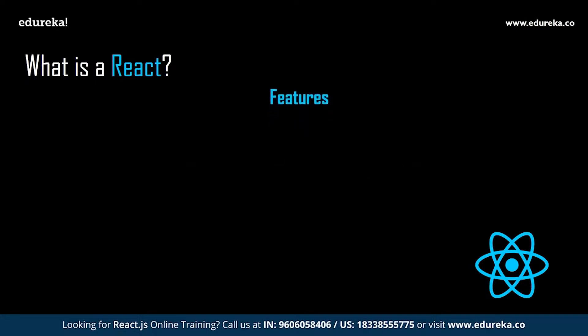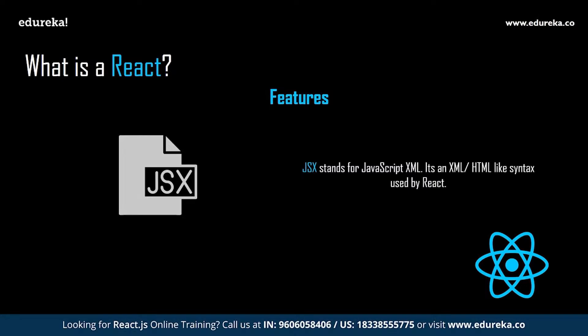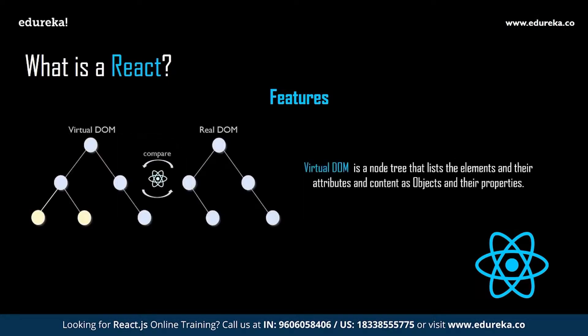JSX stands for JavaScript XML. It is an XML/HTML-like syntax used by React that extends the ECMAScript so that XML or HTML-like text can co-exist with JavaScript React code. This syntax is used by preprocessors like Babel to transform HTML-like text found in JavaScript files into standard JavaScript objects. With JSX, you can embed HTML code inside JavaScript, making it easy to understand and boosting JavaScript performance while making the application robust.